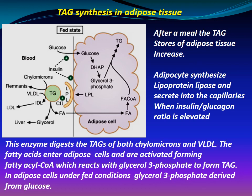Triacylglycerol synthesis in adipose tissue: after a meal, the triacylglycerol stores of adipose tissue increase. Adipocytes synthesize lipoprotein lipase and secrete it into the capillaries when the insulin-to-glucagon ratio is elevated. This enzyme digests the triacylglycerols of both chylomicrons and VLDL. The fatty acids enter adipose cells and are activated, forming fatty acyl-CoA, which reacts with glycerol-3-phosphate to form triacylglycerol. In adipose cells under fed conditions, glycerol-3-phosphate is derived from glucose.